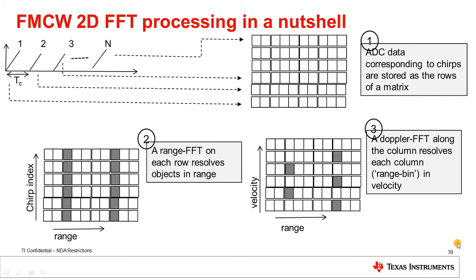I think we've progressed a lot so far. We know that objects at different ranges can be resolved using a range FFT. And then, Doppler FFT is done across subsequent chirps in a frame, which resolves objects which may be at the same range but have different velocities with respect to the radar. So, this slide is a summary of everything that we've learned so far. Here you have a frame, multiple chirps transmitted in a frame. The ADC samples corresponding to each of these chirps can be visualized as being stored as the rows of a matrix.